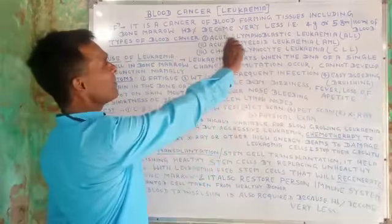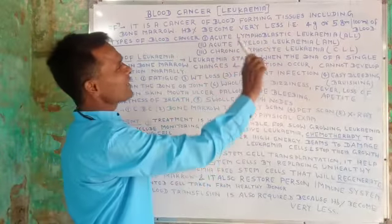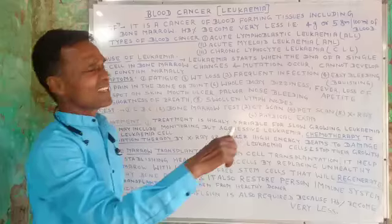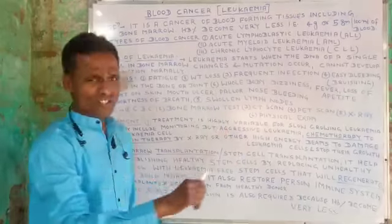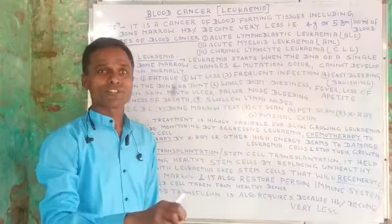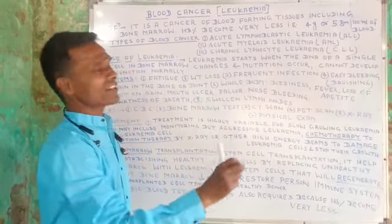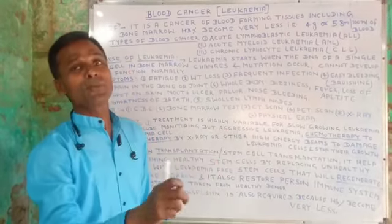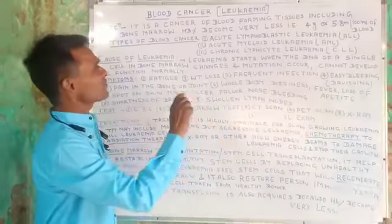In blood cancer, hemoglobin percent becomes very low — typically around 4 to 5 grams.